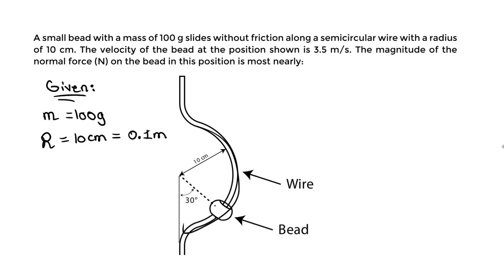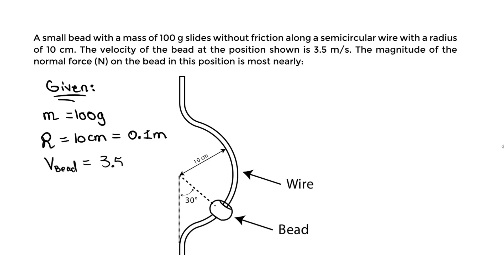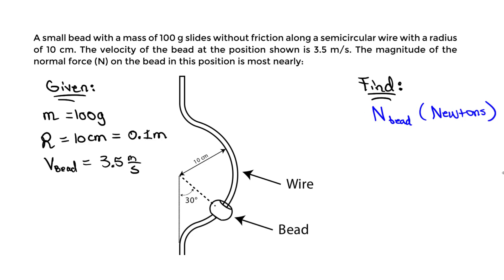The radius of the curve is 0.1 m. At this position, at this instant, the velocity of the bead equals 3.5 m/s. Finally, we need to find the normal force N on the bead, in units of newtons.